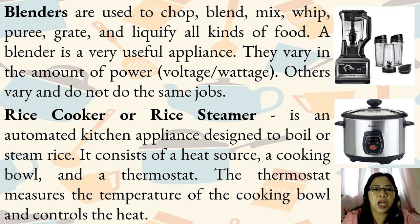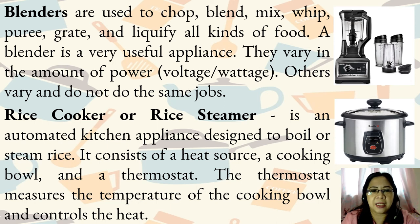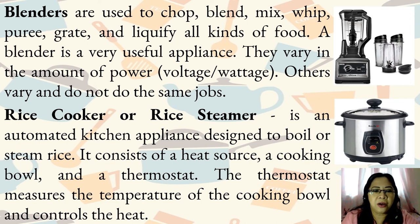Blenders are used to chop, blend, mix, whip, puree, grate, and liquefy all kinds of food. A blender is a very useful appliance. They vary in the amount of power, either voltage or wattage, and others vary and do not do the same jobs. Rice cooker or rice steamer is an automated kitchen appliance designed to boil or steam rice. It consists of a heat source, a cooking bowl, and a thermostat. The thermostat measures the temperature of the cooking bowl and controls the heat.